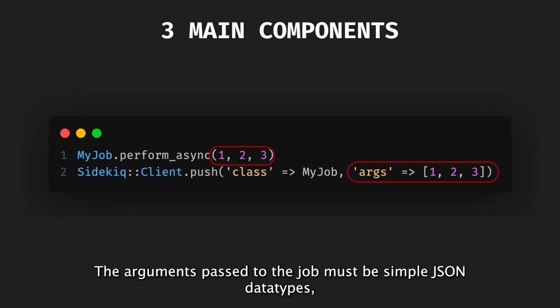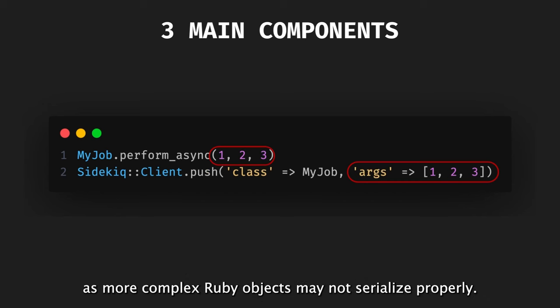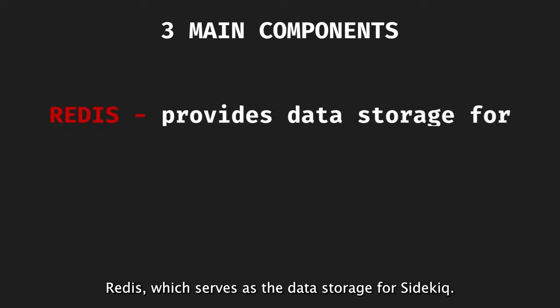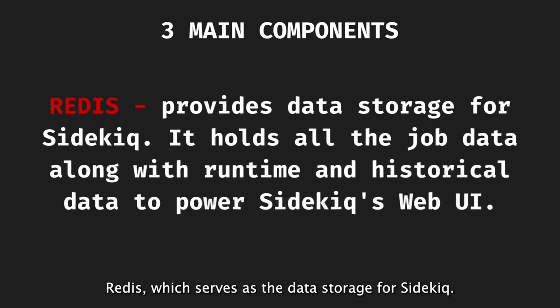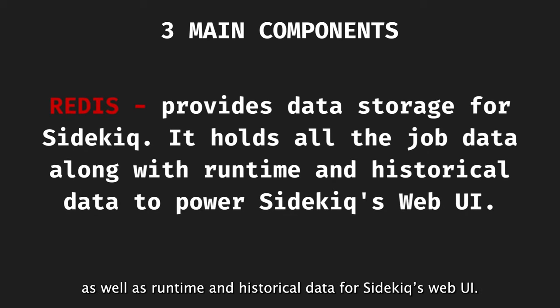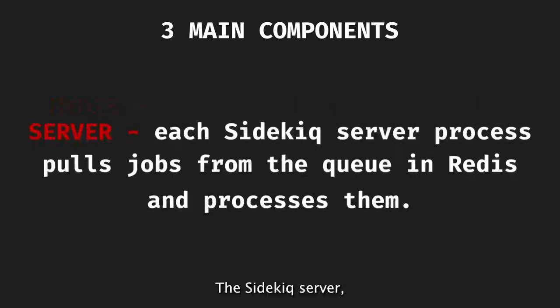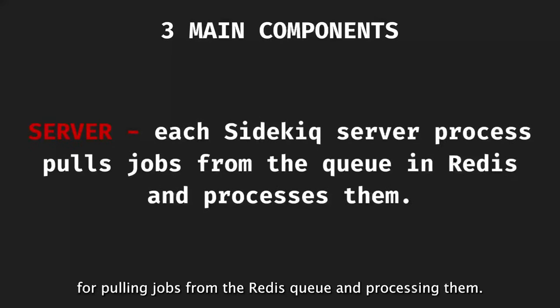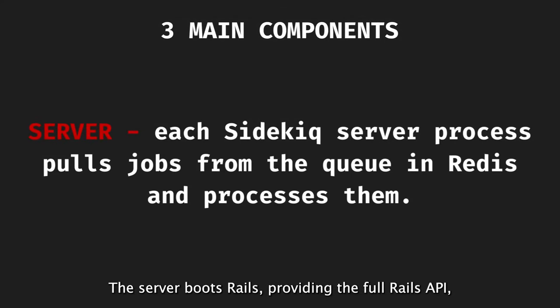The arguments passed to the job must be simple JSON data types, as more complex Ruby objects may not serialize properly. The second component is Redis, which serves as the data storage for Sidekiq. It stores all the job data, as well as runtime and historical data for Sidekiq's web UI. The third component is the Sidekiq server, which is responsible for pulling jobs from the Redis queue and processing them.